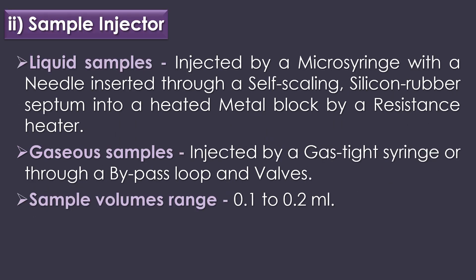The second part of gas chromatography is the sample injector. Liquid samples are injected by a microsyringe with a needle inserted through a self-sealing silicone rubber septum into a heated metal block. Gaseous samples are injected by a gas-type syringe or through a bypass loop and valves. A typical sample volume used for gas chromatography analysis ranges from 0.1 to 0.2 ml.